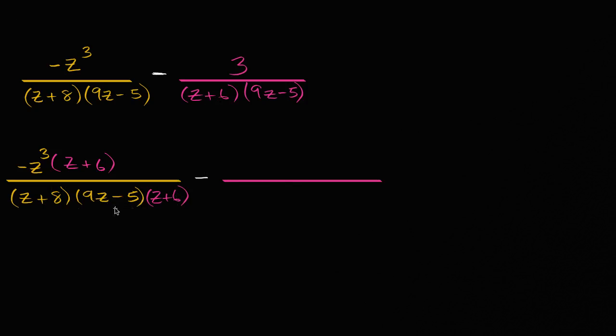We had, well, we want the same denominator, so we could write this as z plus eight, z plus eight times z plus six times z plus six times nine z minus five. And these are equivalent. I've just changed the order that we multiply in, and that doesn't change their value.